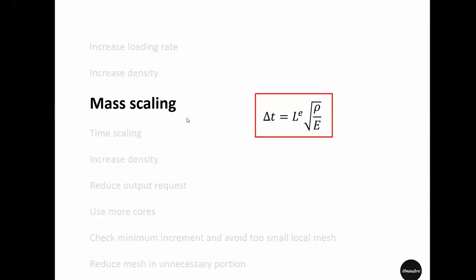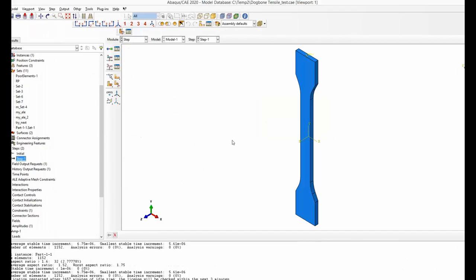Tip number three is mass scaling. Mass scaling is almost like increasing the density, because when you increase density the mass of the material also increases. But using mass scaling in Abaqus you can be more clever than increasing the density across the whole specimen.